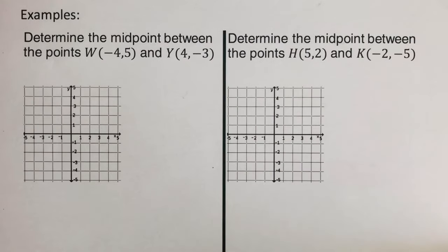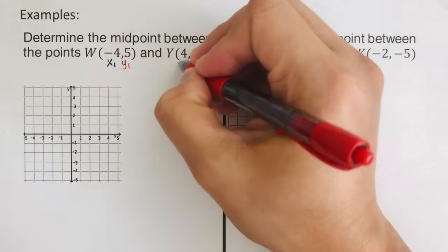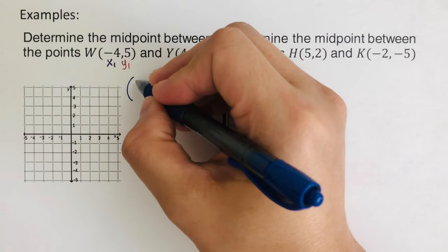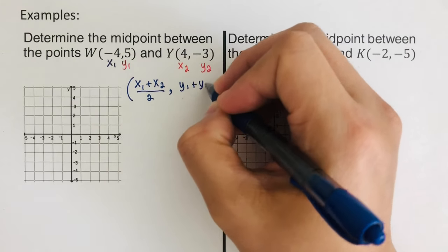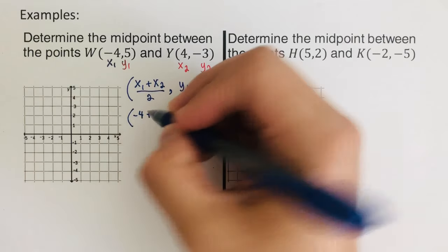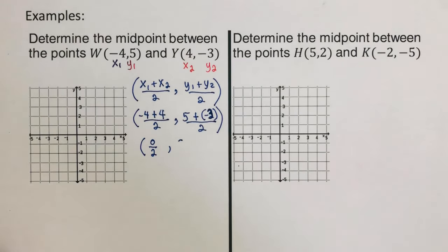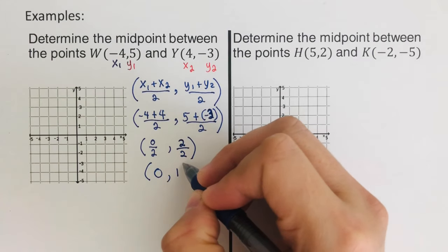Pause the video now and try the next problem on your own, then check your answer. For this problem, the first step is again to label the points: x₁, y₁ and x₂, y₂. Then plug into the midpoint formula: x₁ plus x₂ over 2, and y₁ plus y₂ over 2. Our x₁ is -4 plus x₂ which is 4, over 2. Our y₁ is 5 plus y₂ which is -3, over 2. Simplifying gives us (0, 1) — this is the midpoint between points W and Y.